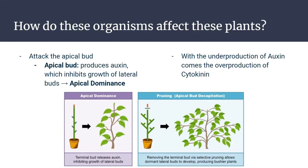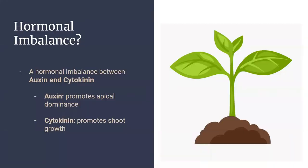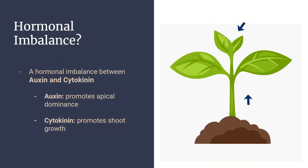Predating organisms hurt the apical bud and prevent it from doing its job, causing a hormonal imbalance of auxin and an additional hormone called cytokinin. Cytokinin promotes cell division in plant shoots. It is produced in the root apical meristems and travels with water up the stem through the xylem to reach its destination.